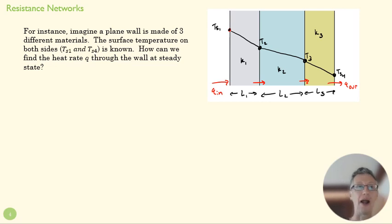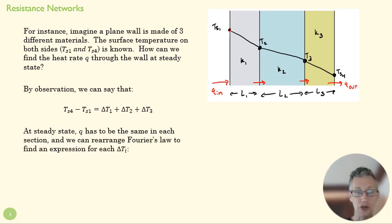So let's put this into practice. Imagine a plane wall is made of three different materials here. We can't just use a rate equation here because our k is going to be different in each of these situations. And we want to know what our heat rate is through those walls. By observation, we can recognize that the change in temperature from T1 to T4, that is the T surface 4 and T surface 1, is going to be the sum of the delta T's in each of the three materials.